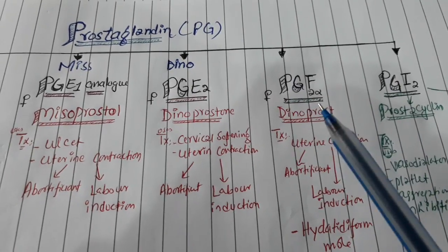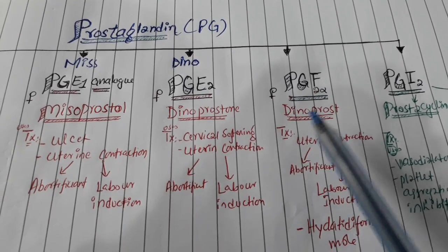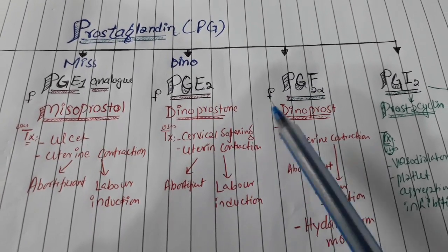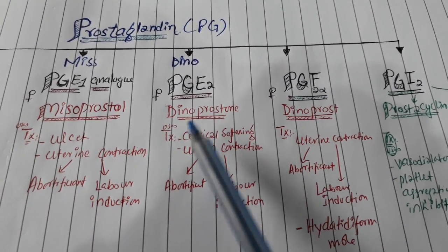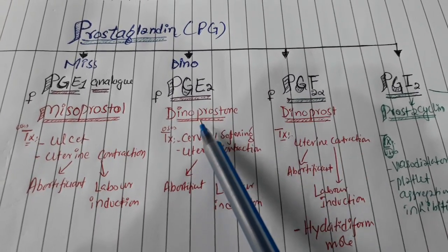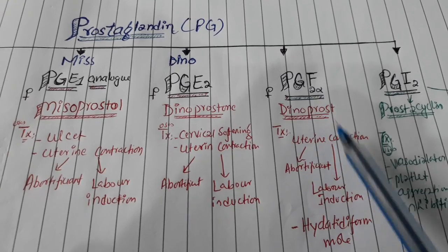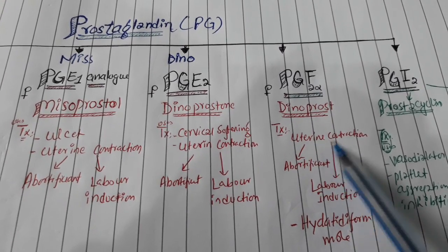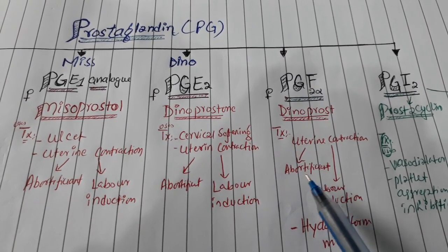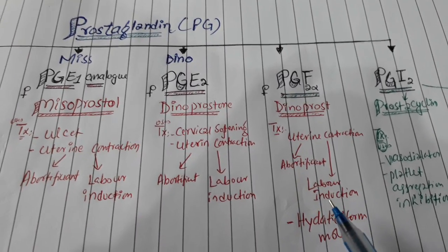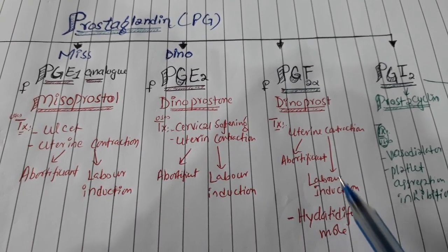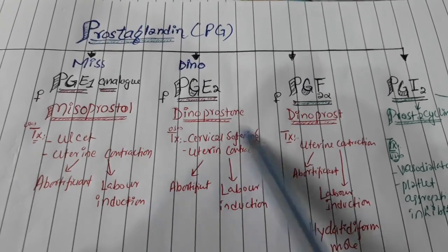Dinoprostol - now the PGF2 alpha, that is called dinoprostol. It is also the analog of dinoprostol. This is called PGF2 alpha, so it could also be used - function is uterine contraction and can be used as abortifacient agent or it can be used in labor induction, hydratiform mole. These all have the same function.